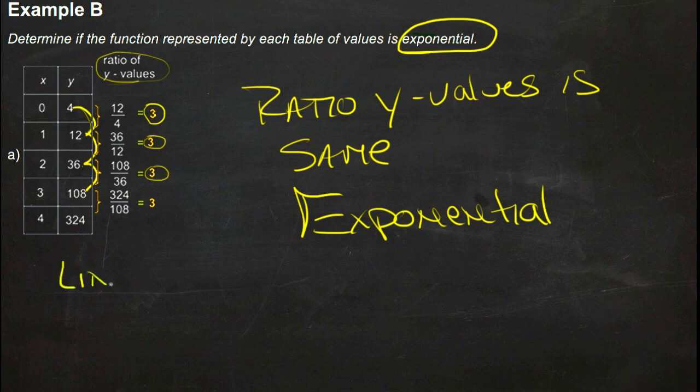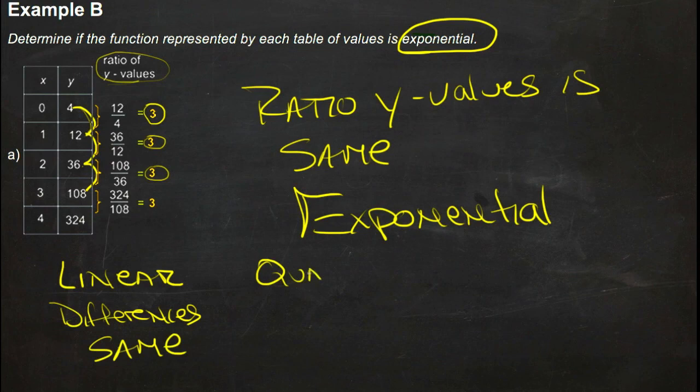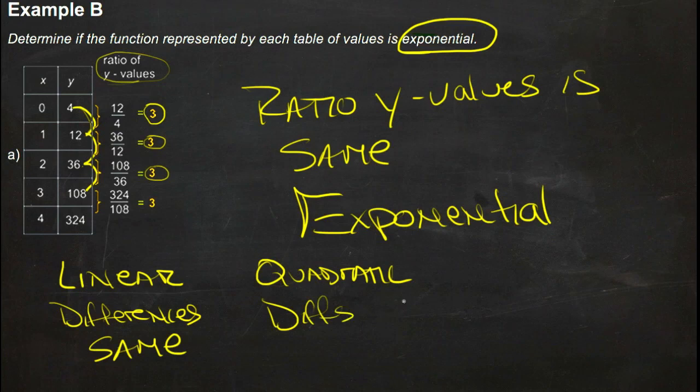So just for a really quick recap, you have a linear if the differences are the same. You have a quadratic if the differences of the differences are the same.